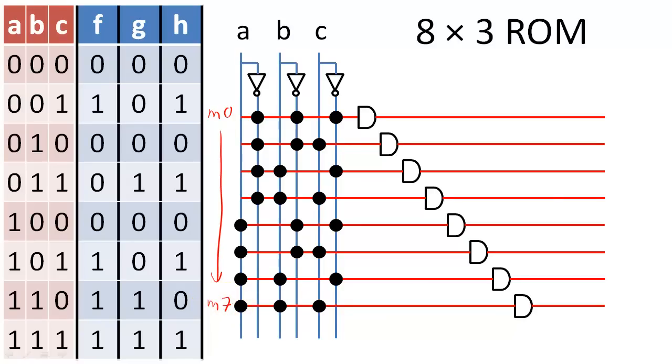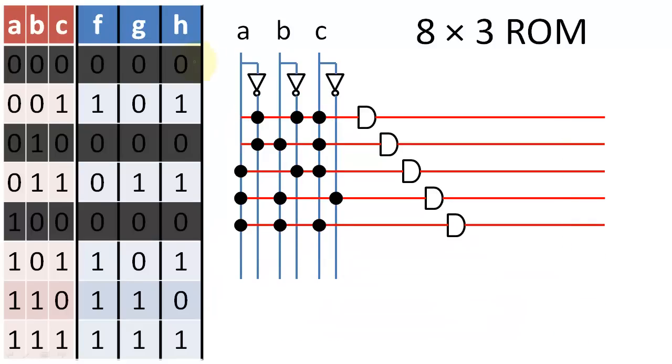For the next step, we must combine the appropriate minterms together with OR gates to create each output expression. Because we will include only those minterms that output a 1 at least once, we will remove these three minterms that don't appear in our expressions. This will hopefully simplify our diagram and leave space for the OR gates that will create our outputs.